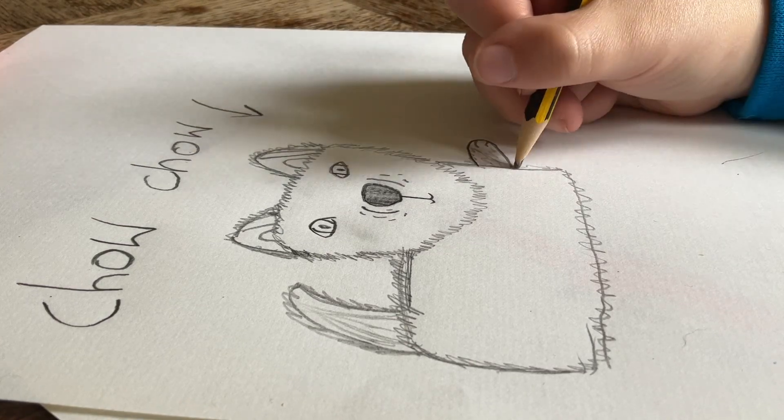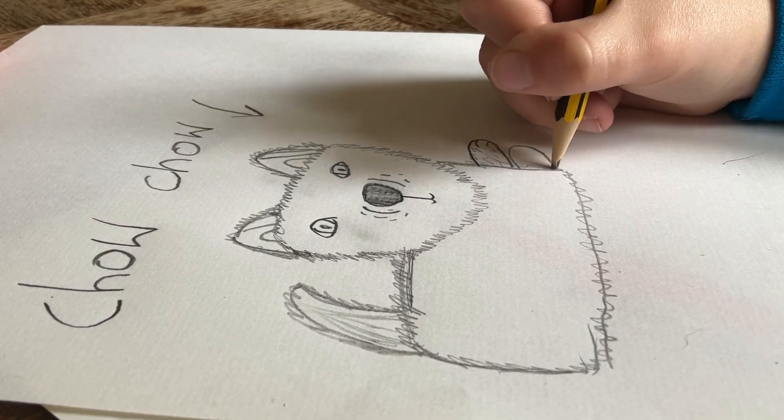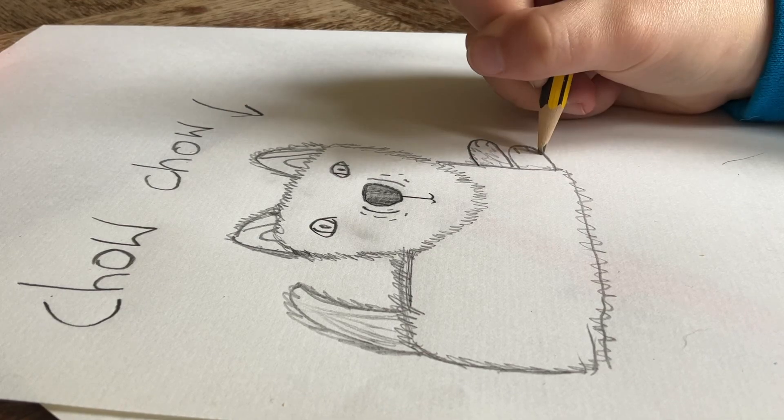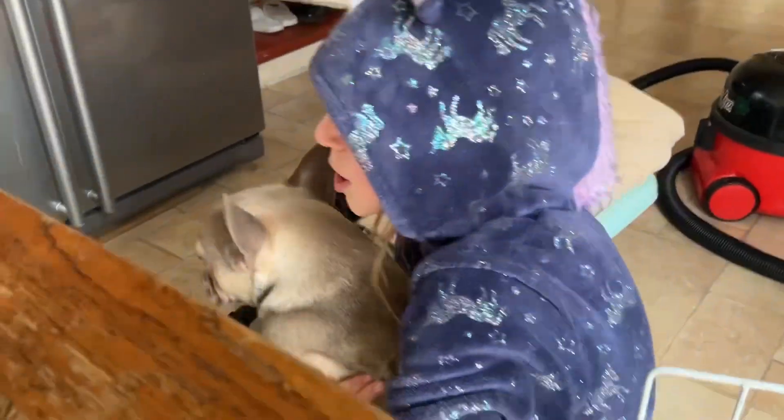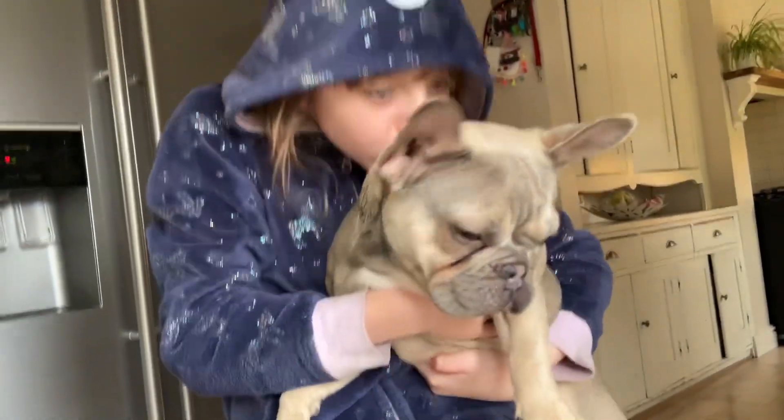Flory, come show Mabel to the camera. Okay. Mabel, come here. Mabel, don't run away from me. We can show Mabel. She is not a chow chow, but she is still cute. This is Flory and Flory's dog Mabel.